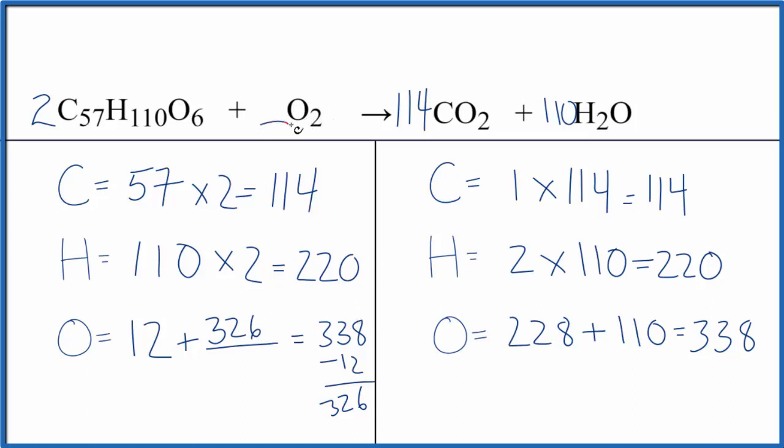So we can change the coefficient in front of the oxygen here, and that won't change anything else. So two times something gives us this 326. That number is 163. And we're done. This equation is balanced. This is a pretty complicated equation to balance, especially because you have these larger numbers here. But that's how you balance C57, H110, O6 plus O2.